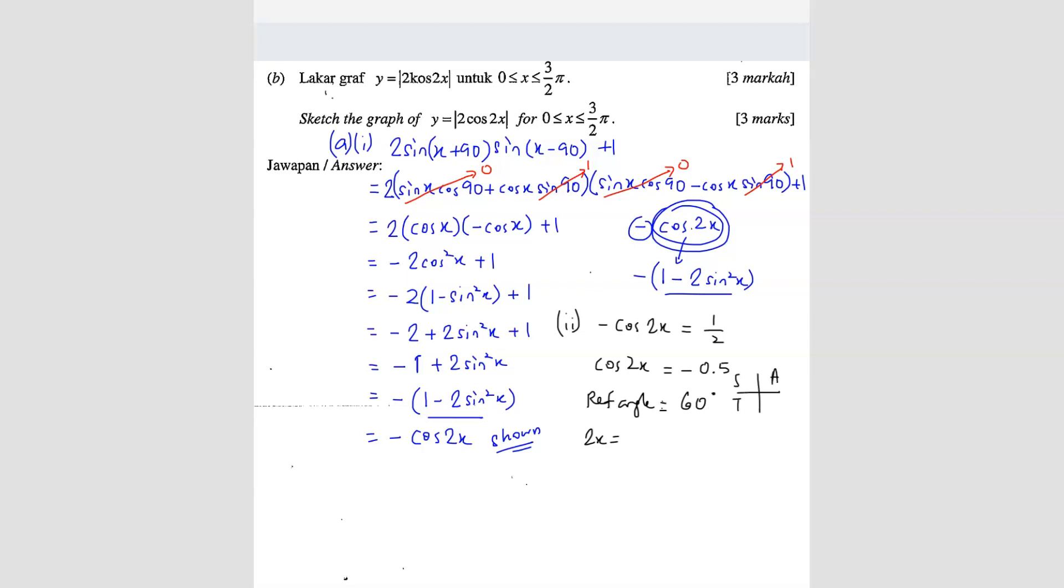All science teachers are crazy. So cos negative will give you these two quadrants. Quadrant 2, quadrant 3. So quadrant 2 will be 180 - 60. So 180 - 60 will give you 120. And then quadrant 3, 180 + 60. So you get 240.